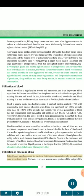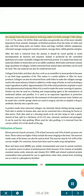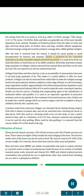Utilization of hides and skins. Animal hides have been used for shelters, clothing and containers by human beings since prehistoric times. The hides represent a remarkable portion of the live animal's weight, from 4 percent to as much as 11 percent — e.g., cattle 5.1–8.5 percent (average 7.0%), sheep 11.0–11.7 percent, swine 3.0–8.0 percent. Hides and skins are generally one of the most valuable by-products from animals. Examples of finished products from cattle and pig hides and from sheep pelts include leather shoes and bags, rawhide, athletic equipment, reformed sausage casing, cosmetic products, sausage skins, edible gelatine and glue. After the hide is removed from the animal, it should be cured quickly to avoid decomposition by bacteria and enzymes. Gelatin is produced by the controlled hydrolysis of water-insoluble collagen derived from protein. It is made from fresh raw materials — hides or bone — that are in an edible condition. Both hides and bones contain large quantities of collagen. Gelatin extracted from animal skins and hides can be used for food. Collagen from hides and skins also has a role as an emulsifier in meat products because it can bind large quantities of fat, making it a useful additive or filler for meat products.